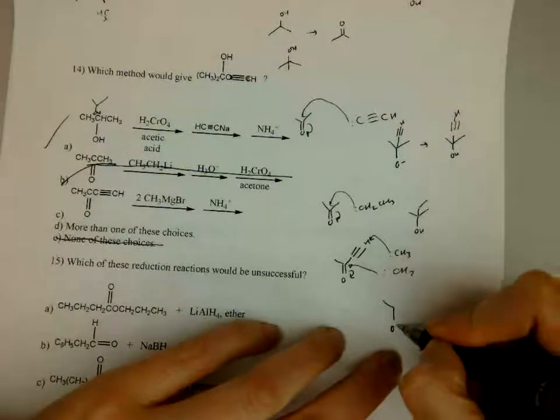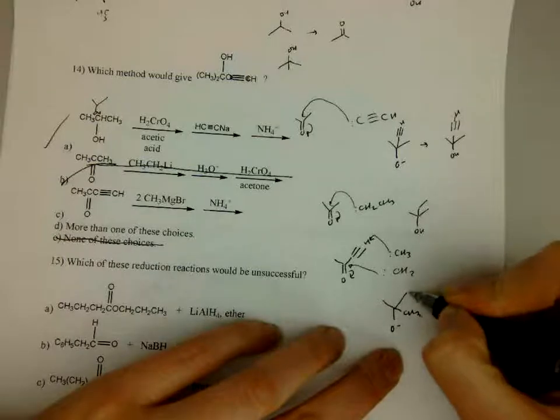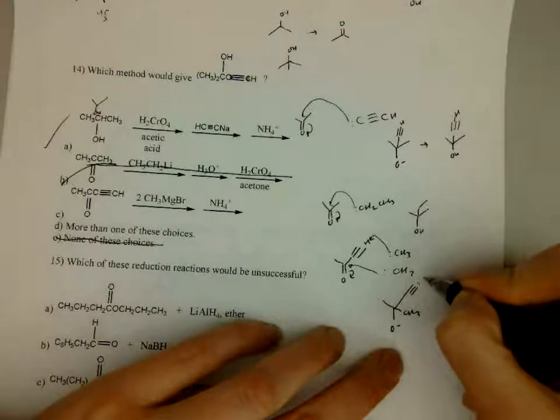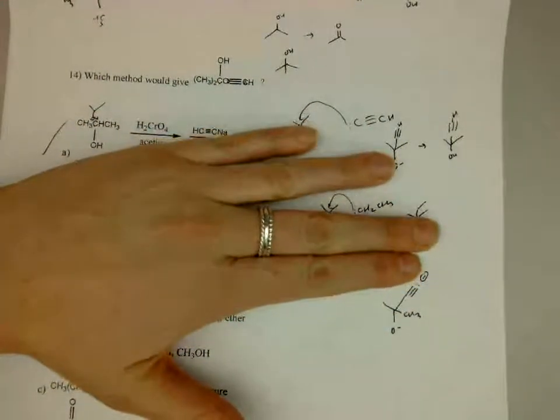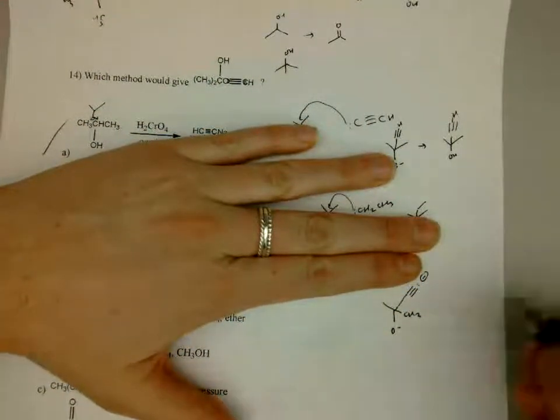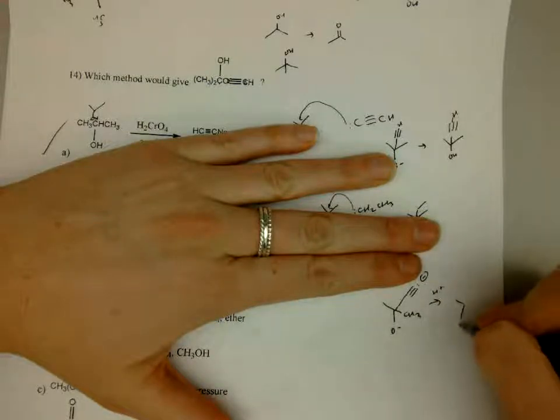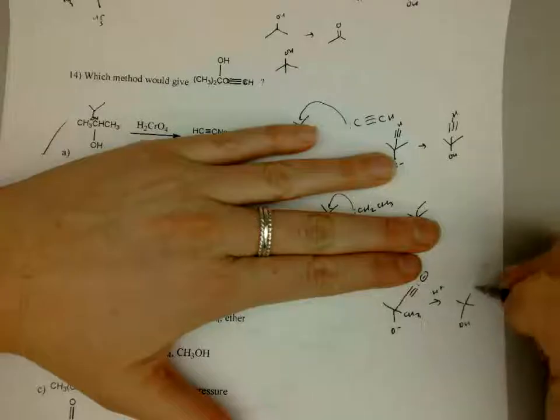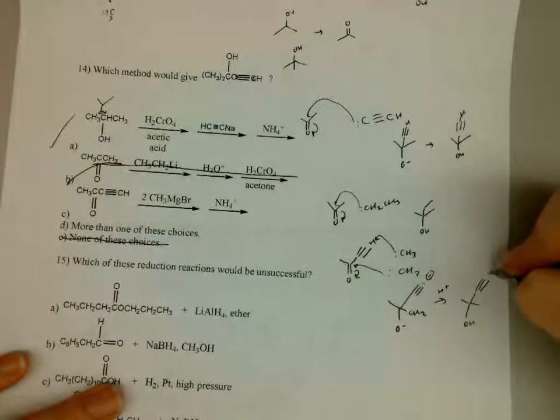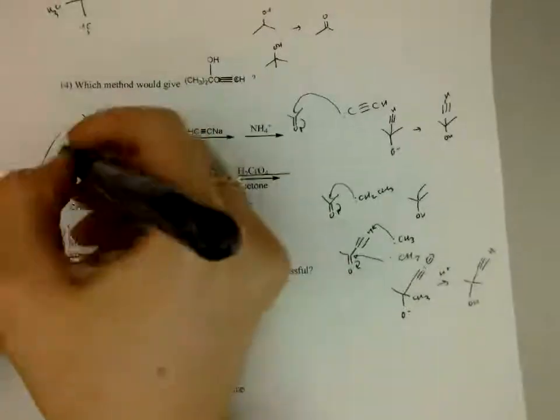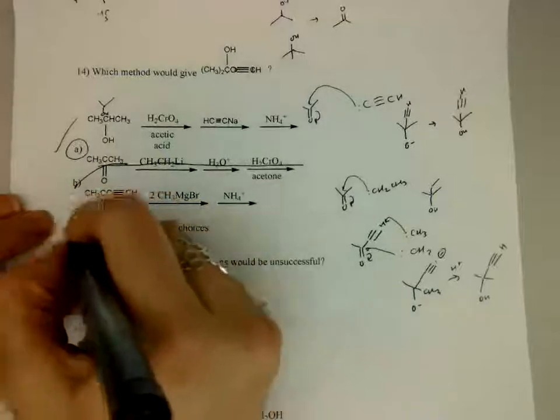So this will actually happen, but there's two equivalents, so then it can still attack. So your actual structure will look like this, your CH3 where it attacked, and then your carbon-carbon triple bond, and it'll have a little minus charge there. This is from up top, so it looks like this. And then you could just add acid to that, and you'll actually get the structure that we're looking for. So it looks like answer choice A and C will both work, so D would be your right answer.